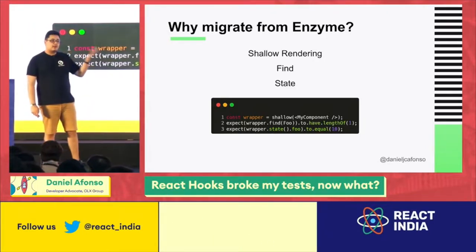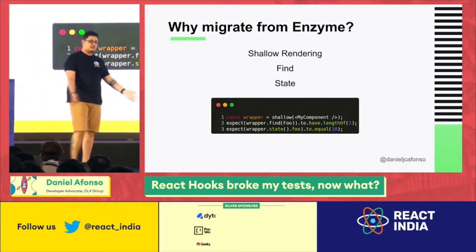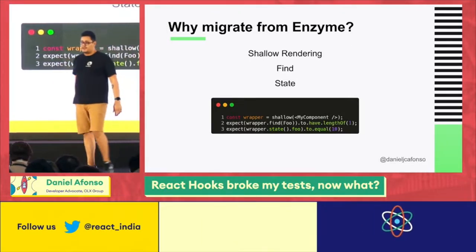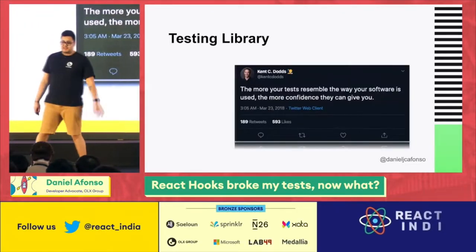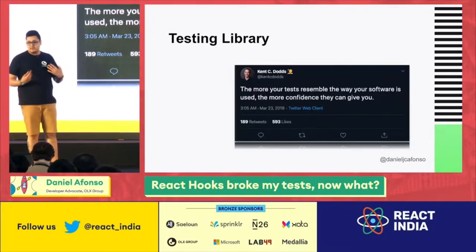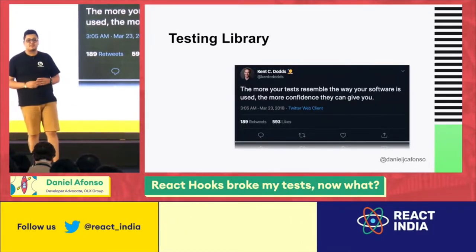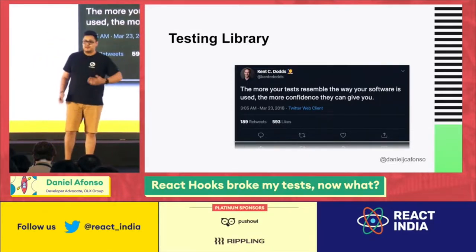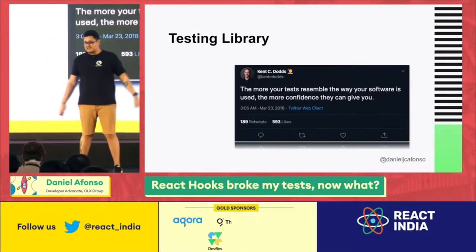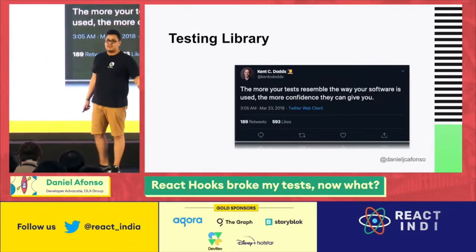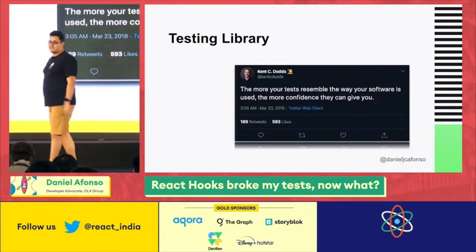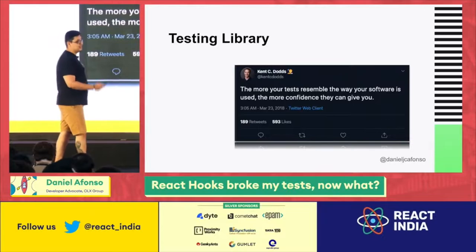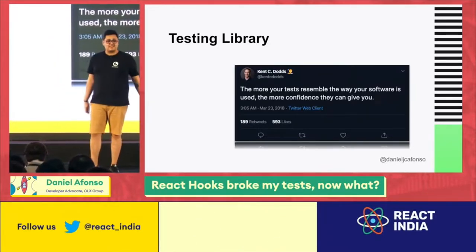So we did our migration, got out of Enzyme, and started using React Testing Library from the Testing Library family. With it comes its main guideline: the more your tests resemble the way your software is used, the more confidence they can give you. This is a quote by Kent C. Dodds, who is actually the creator of the Testing Library — so thanks to him for making our lives much easier by creating this.